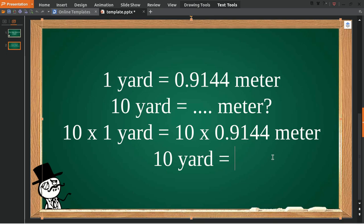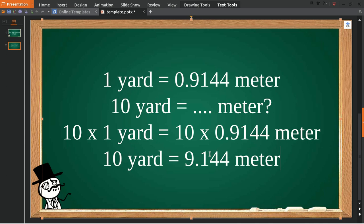10 times this number is equal to 9.144 meter. So 10 yard is equal to 9.144 meter. I think that's all for me. If you have any further questions you can leave it in the comment box. Thank you for watching and see you later.